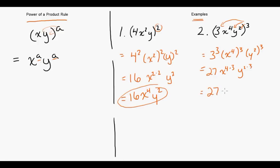So we're going to get 27x to the 12 from the 4 times 3 and y to the 6 from the 2 times 3.